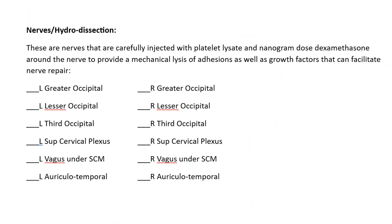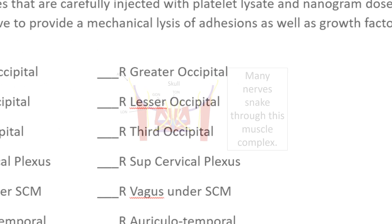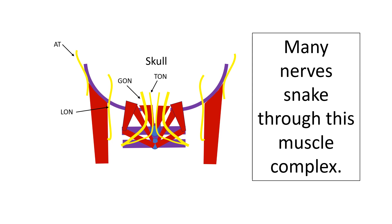We can also hydrodissect nerves. All this means is carefully injecting platelet lysate and a nanogram — a very tiny dose of dexamethasone — around the nerve to provide both a mechanical breakup of scar tissue as well as growth factors that can hopefully facilitate nerve repair. The nerves that snake through this muscle complex include: TON, the third occipital nerve; GON, the greater occipital nerve; LON, the lesser occipital nerve; and AT, the auriculotemporal nerve, sometimes also called the temporauricular nerve. These hydrodissections are only done if these nerves are symptomatic.